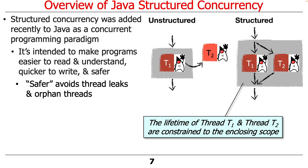In particular, a structured model means that the lifetime of thread one and thread two are constrained to the scope in which they're created, much like the way in which structured programming keeps things nicely organized with control constructs like if statements, for loops, or switches.